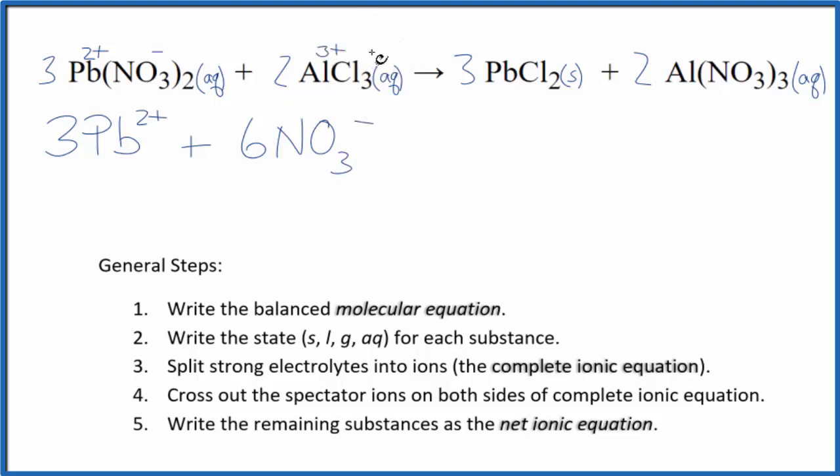Aluminum, 3 plus, and the chloride ion, that'll be a 1 minus. So I have two aluminum ions, and then I have 2 times the 3 chloride ions. So I have six of those chloride ions. And those are the reactants in our complete ionic equation.